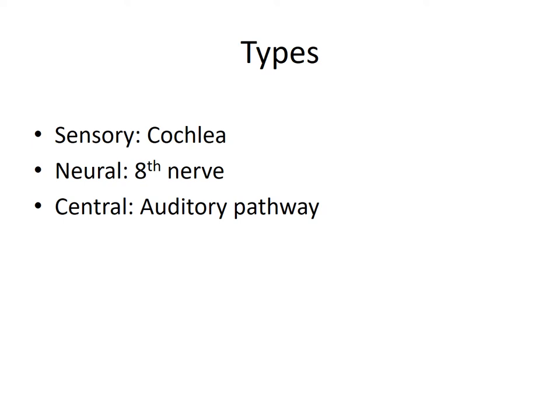Sensorineural hearing loss can be either of sensory type — i.e. involvement of the cochlea — or neural type, i.e. involvement of the eighth nerve, or central type, i.e. involvement of the auditory pathway beyond the eighth nerve up to the auditory cortex. Neural and central are both sometimes called retrocochlear. So sensorineural loss can be sensory, neural, or central.